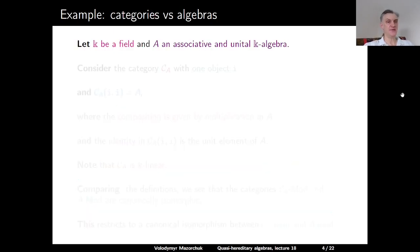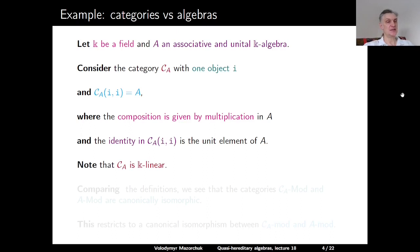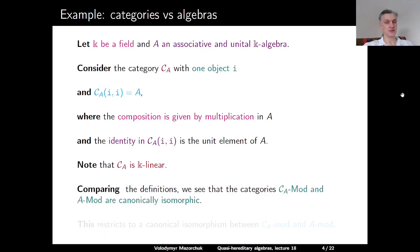Here is an example. Let k be a field and A an associative and unital k-algebra. Consider the category C_A with one object i, such that the morphism set from i to i is equal to our algebra A. The composition is given by multiplication in A, and the identity in this hom-space is the unit element of A. Comparing the definition of an A-module and a C_A-module, we see that they coincide, so the categories of all C_A-modules and all A-modules are canonically isomorphic.